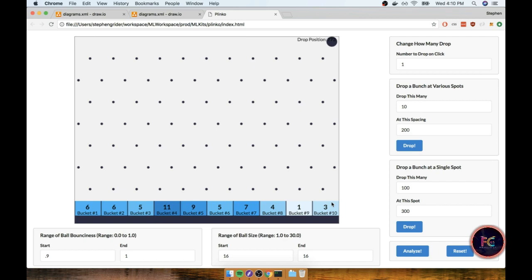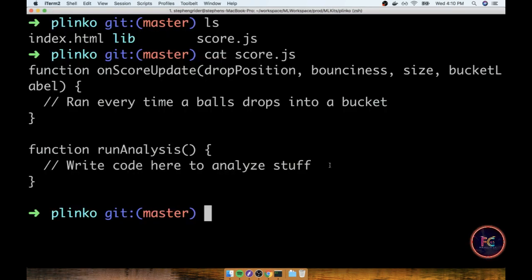So to get started with this process we're going to first open up our code editor based upon the project directory that we had just downloaded onto our local machine. And so back inside of my terminal I'm at that same Plinko directory. This is a folder that we created a couple sections ago and inside of here is the index.html file, a lib folder, and a score.js file.